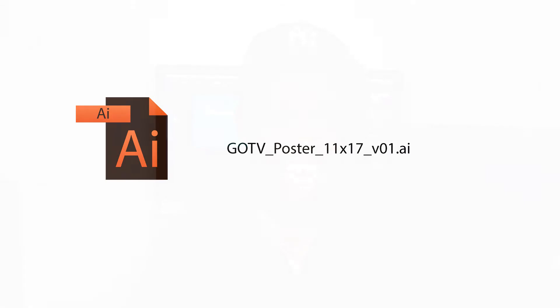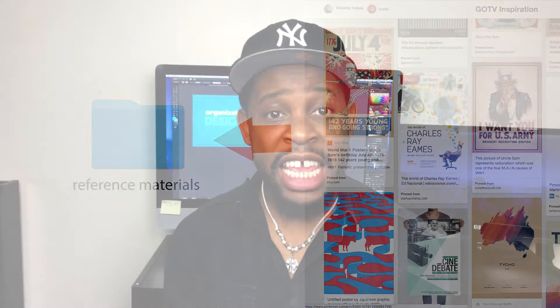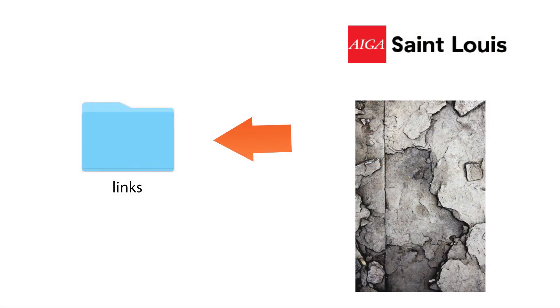The next folder is the reference material folder. The reference material folder houses any inspirational materials that I might use in producing my design. The links folder houses any links that I use in my design, such as a PSD that's linked in an AI file.